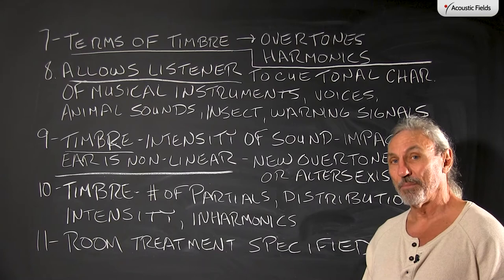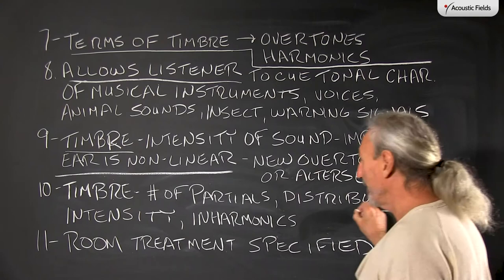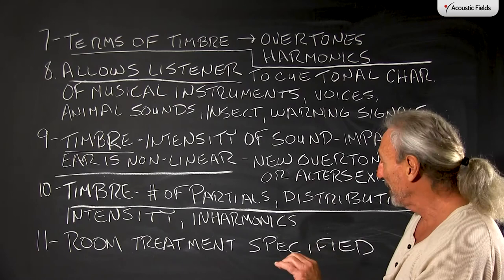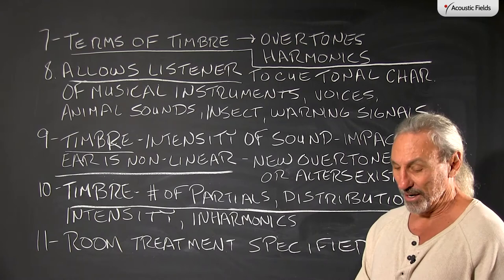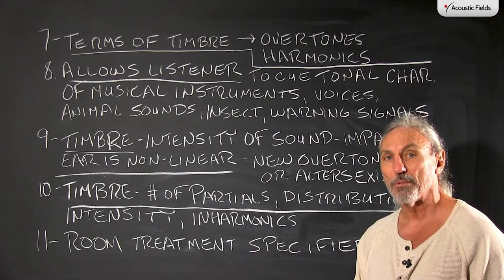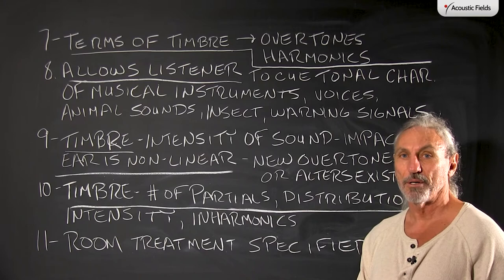So timbre in summary is the number of partials, the distribution, the intensity, the inharmonics, the harmonics, and our room treatment must recognize that. Resolution is critical. Harmonic structure is critical. Rates and levels of absorption are critical. The frequency response of diffusion that you use is critical. The distance from the diffuser is critical. All of these variables must be taken into consideration.